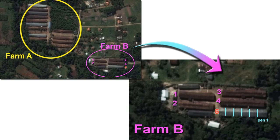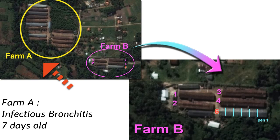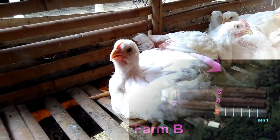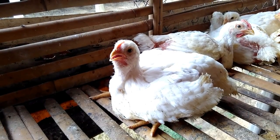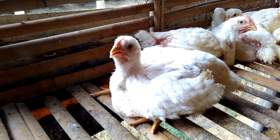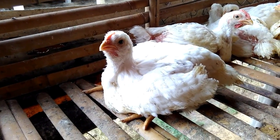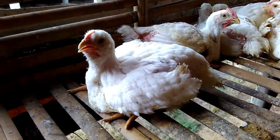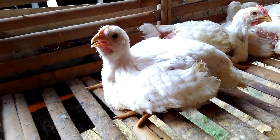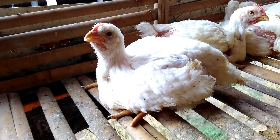On Farm A, all chickens suffered from infectious bronchitis from the age of seven days, starting from one chicken house. The disease spread quickly to the other chicken houses, so that within a week, all the chicken houses on the farm had been infected with the IB virus.